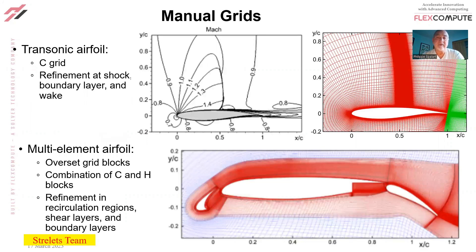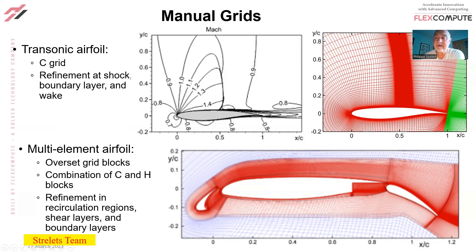There are two types of grids. I'll start with manual grids, which go back to the 70s, and then go on to adaptive. At the top we have one of the maybe easiest cases, which is just a single airfoil. This is work by the Stratas team in Russia. They made a structured C-grid wrapping around the airfoil, with refinements in regions where there are rapid variations: near the leading edge, in the boundary layers, in the wake, and approximately where the shock wave would be. So they put in very fine grid there.